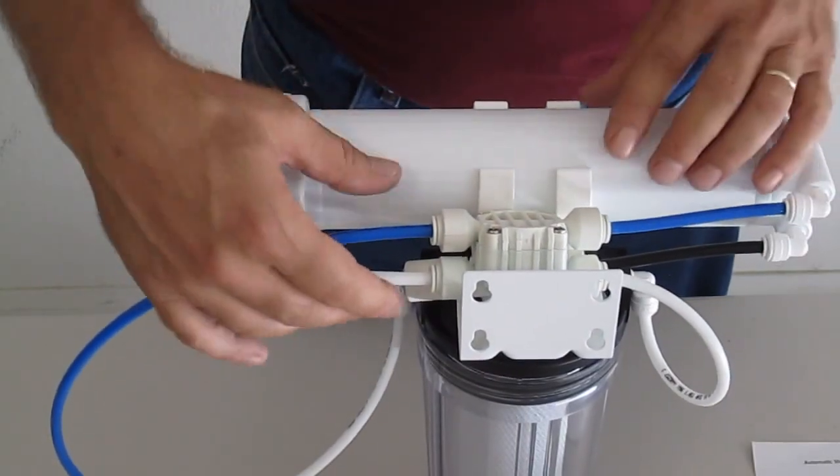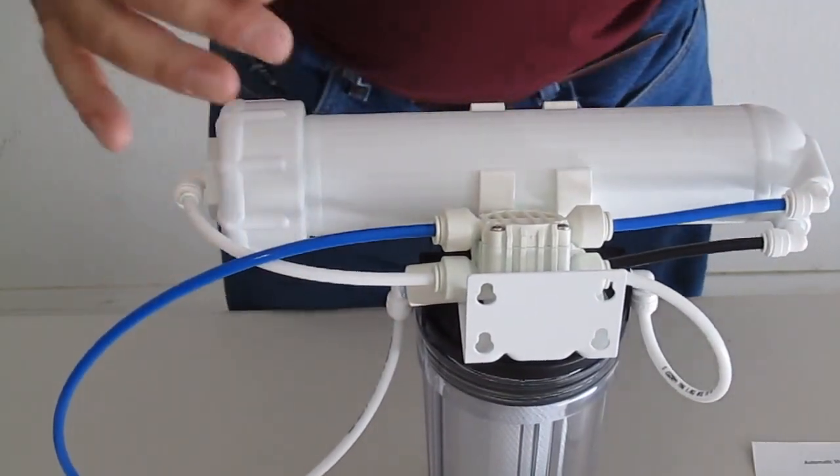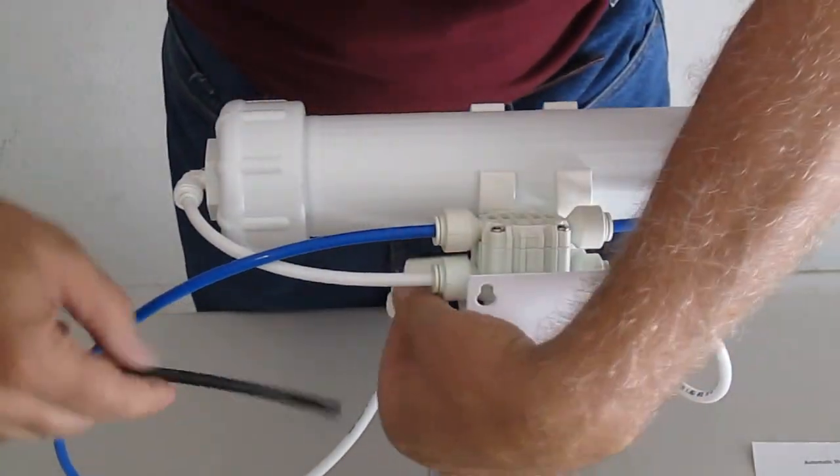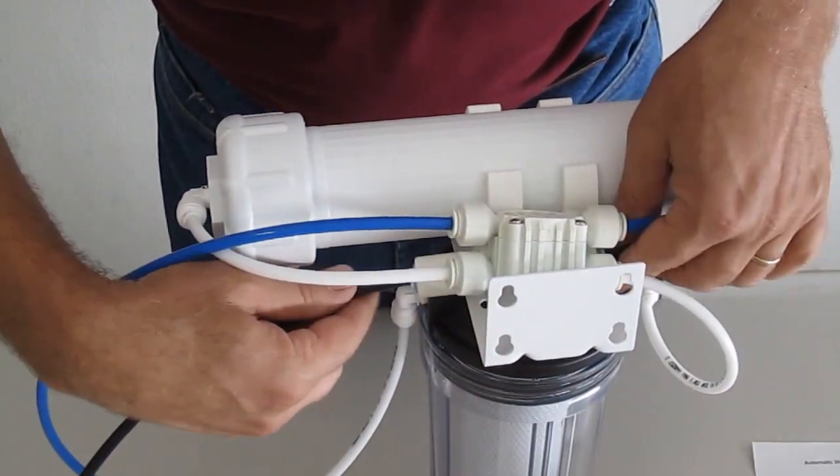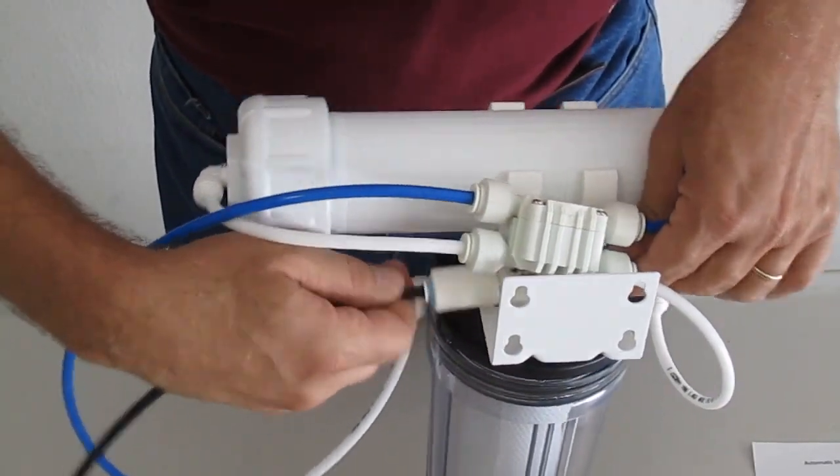Now that you have this all installed, as you can see, it's nice and neat. You're going to go ahead and connect up your drain line, which is going to come out of your flow restrictor. And, of course, we use black lines.